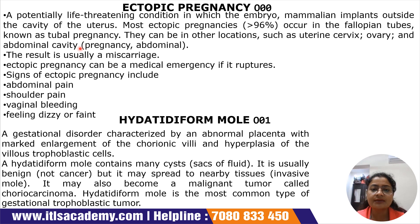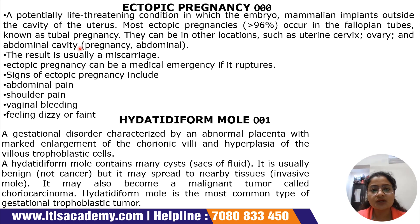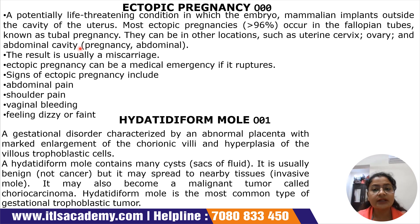Most commonly, implantation occurs in the fallopian tube — fertilization takes place in the isthmus of the fallopian tube and the fertilized zygote fails to travel further to the uterus and implants there instead. It can also get implanted in other places like the uterine cervix, the ovary, or the abdominal cavity.